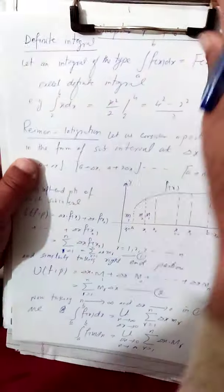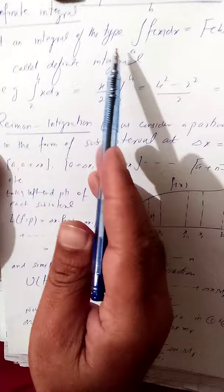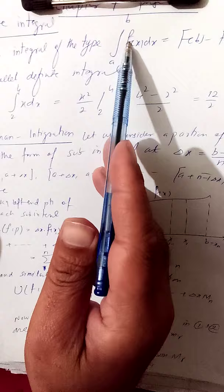Page 3, definite integral. What is a definite integral? This is our new topic. Let an integral of the type: integration from a to b of f(x)dx, where f is the derivative of some function F of x. The upper and lower limit gives F(b) minus F(a). This difference is